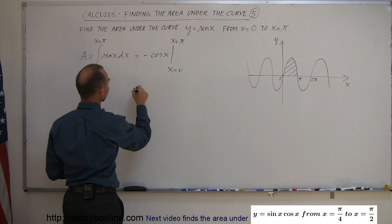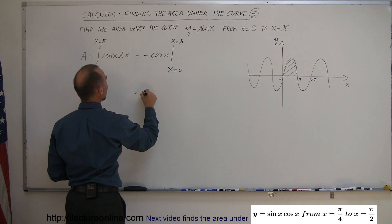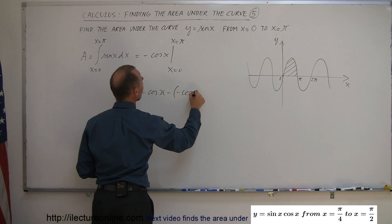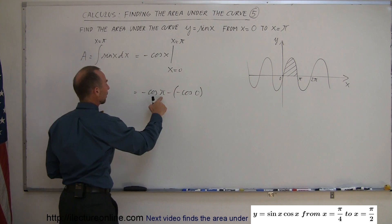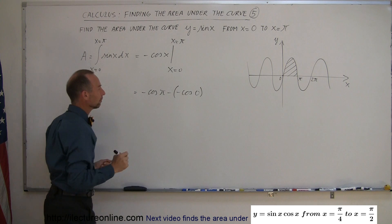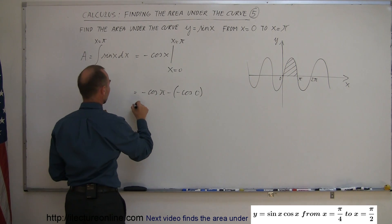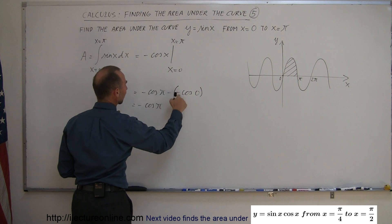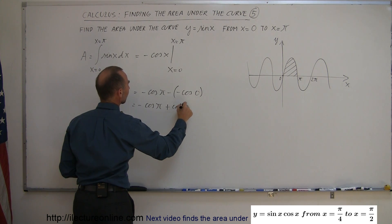When we do that, we plug in the upper limit. So we have minus the cosine of pi minus minus the cosine of 0. So plug in the upper limit, subtract when you plug in the lower limit. So this is equal to minus the cosine of pi, and minus times the minus is plus the cosine of 0.